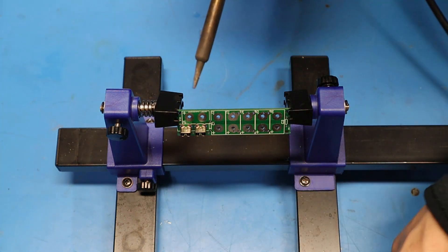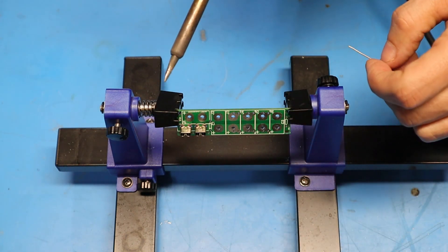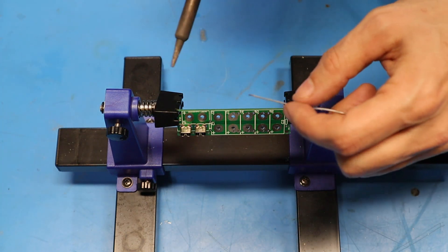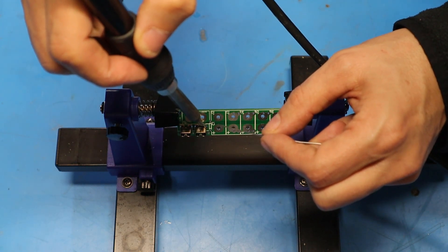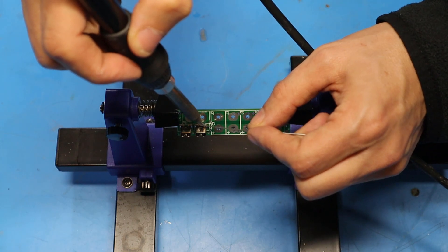What I'm going to do now is tack solder these in from the top side so that they don't fall out, and then I can spin the board around and solder the connections from the back. I'm going to leave the iron on here for a few seconds just to get some heat in here.